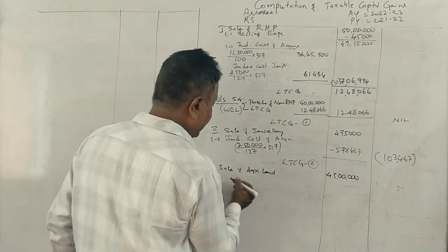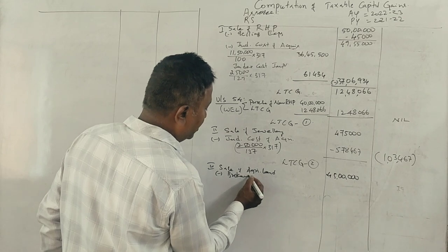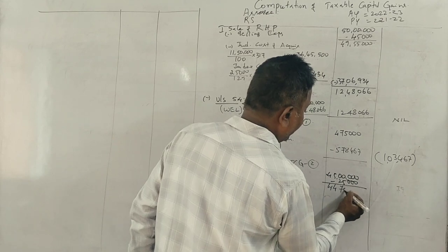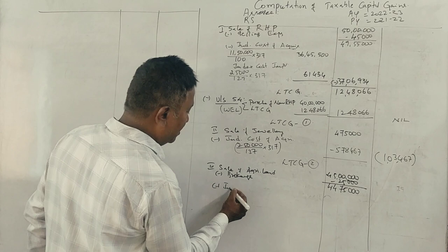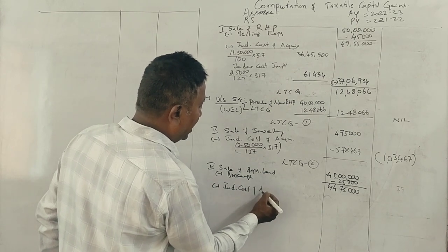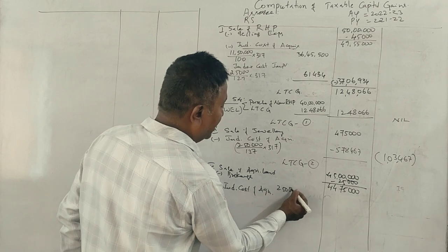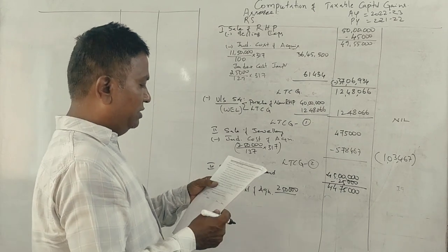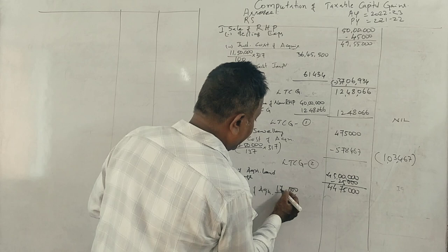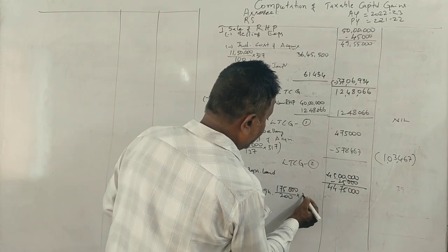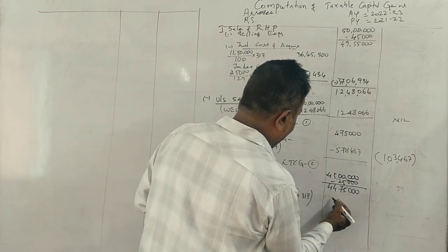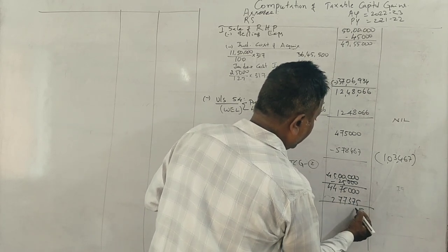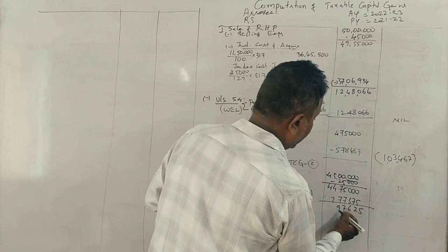For agricultural land: sale price 45,00,000, less brokerage 25,000, giving 44,75,000. Less index cost of acquisition: 1,75,000 divided by 200 multiplied by 317 equals 2,77,375. Total indexed cost is 2,77,375. Capital gain is 41,97,625.